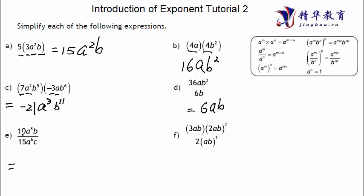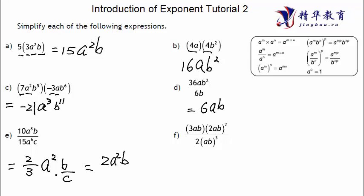Next one: constant divided by constant — 10 divided by 15 simplifies to 2 over 3, dividing both by 5. Then A to the power of 8 divided by A to the power of 6 — power divided by power equals power subtracted — gives A to the power of 2. B divided by nothing stays as B in the numerator. There's no C on top, so C stays in the denominator. The simplified answer is 2A squared B over 3C.